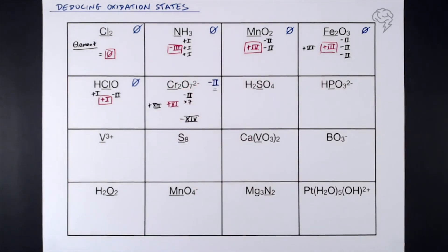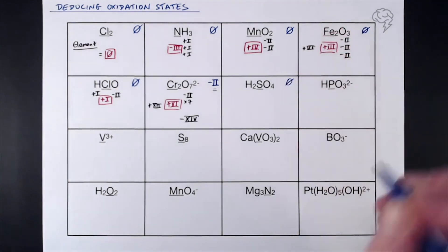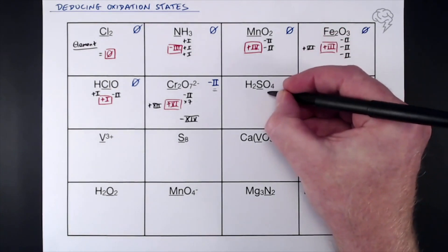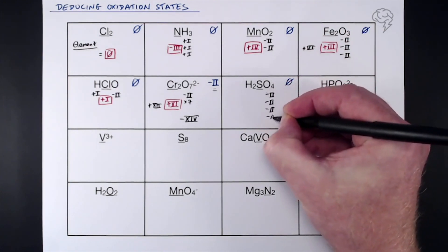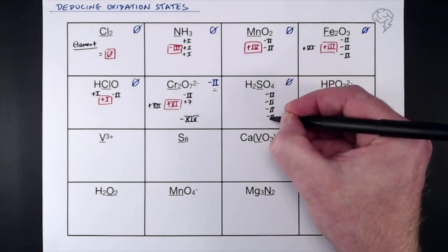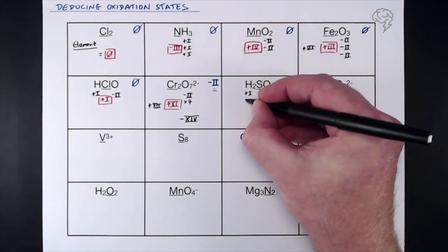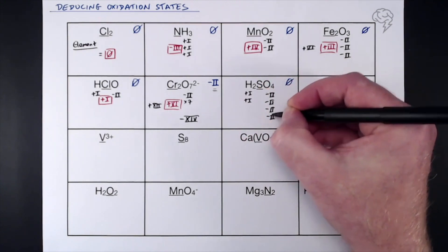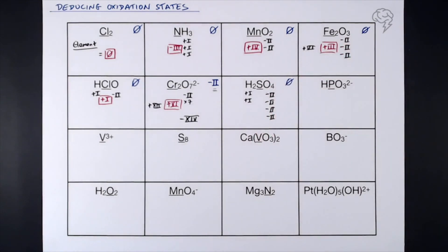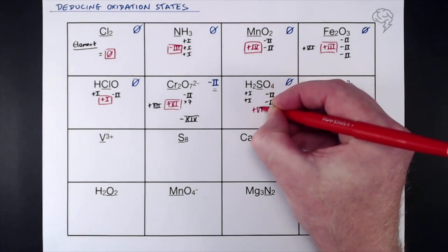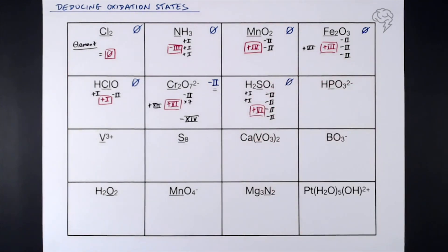Sulfuric acid H₂SO₄ — overall oxidation state zero. We've got four lots of −2 for oxygen, giving −8 total, and two lots of +1 for hydrogen, giving +2. So −8 + 2 = −6 overall from those. We need to reach zero, so sulfur must be +6. That is our oxidation state of sulfur in sulfuric acid.